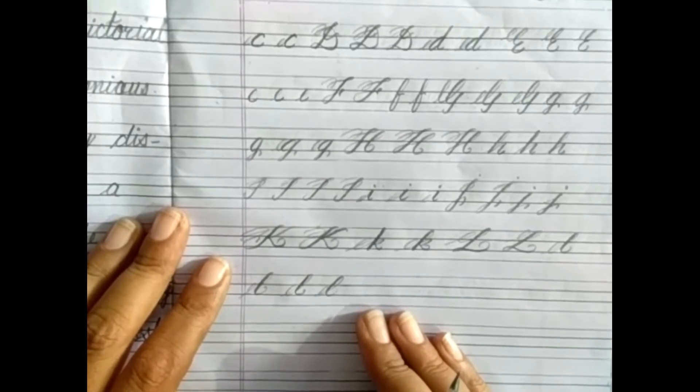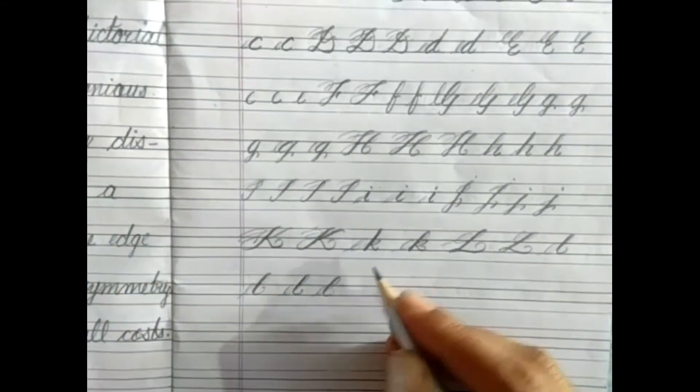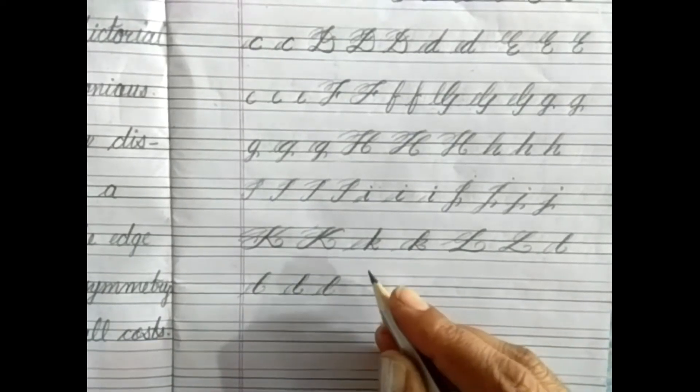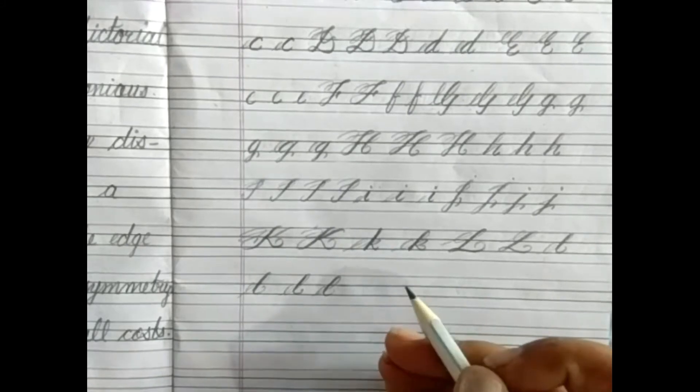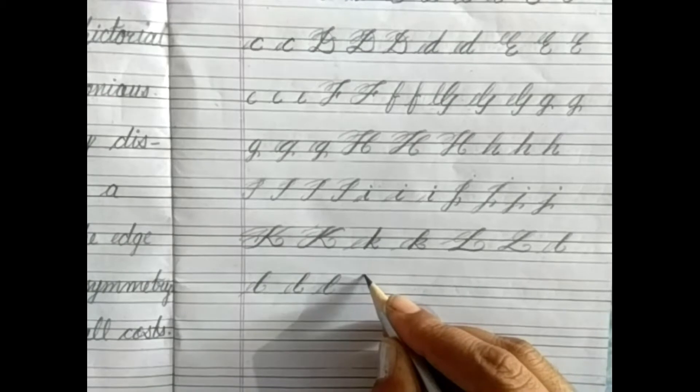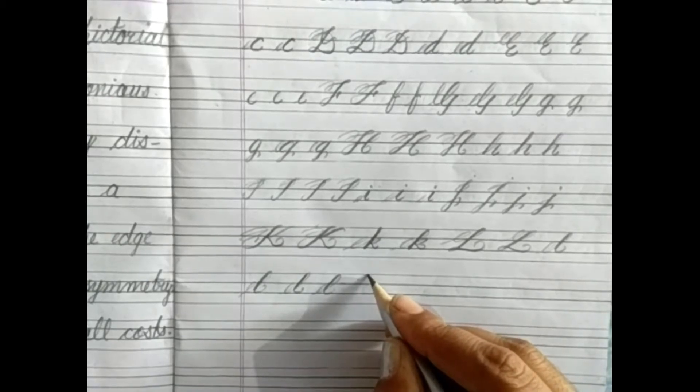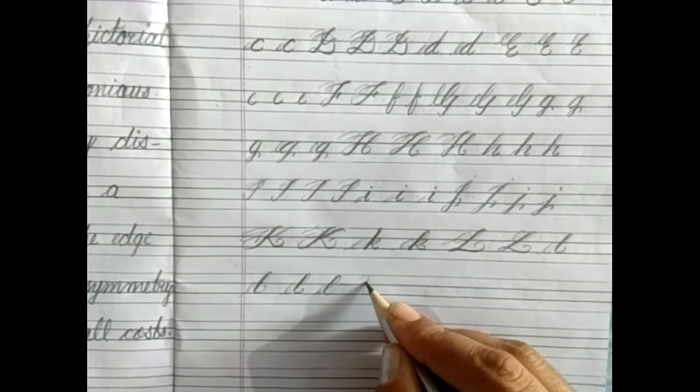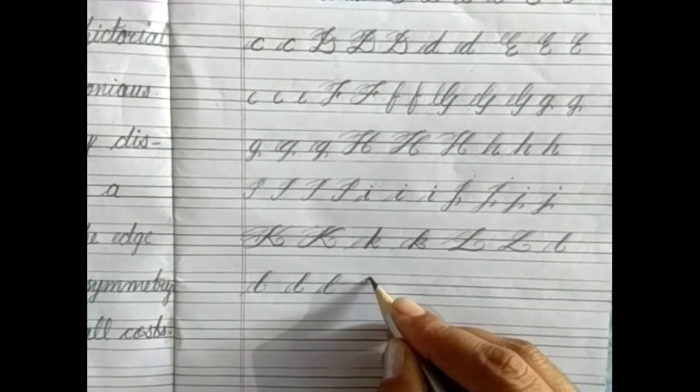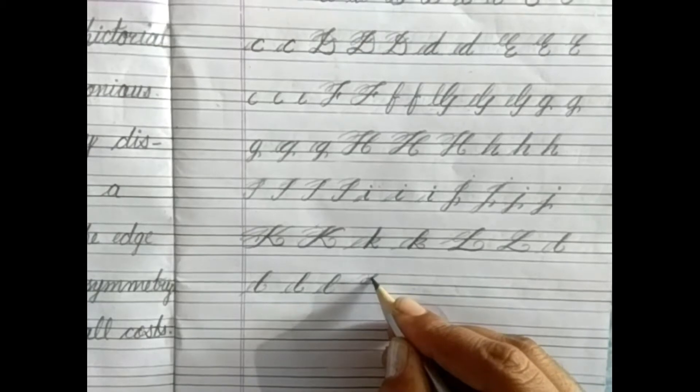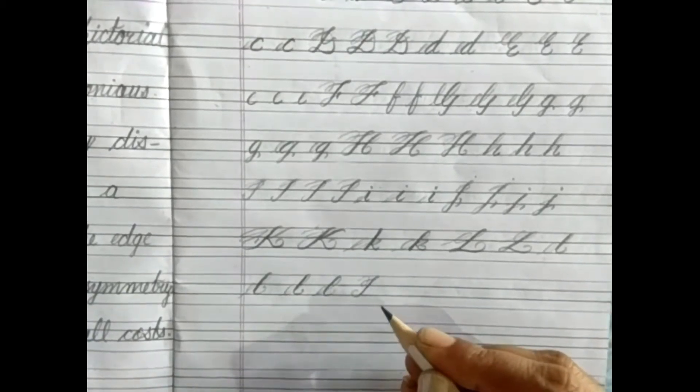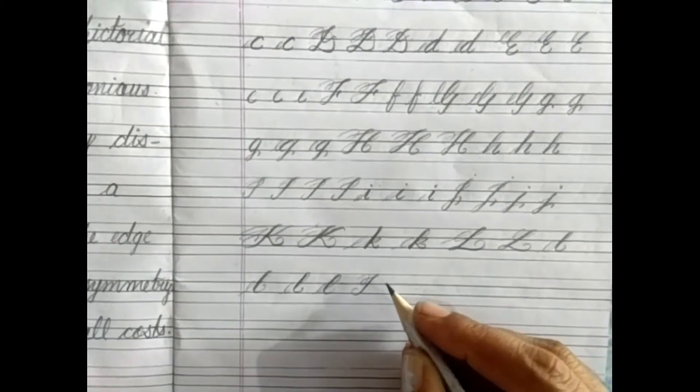will write four letters. So let's start. Here I will write M. One has to hold the pencil with a light hand and go little up like this, and round it down and slant it down like this, then